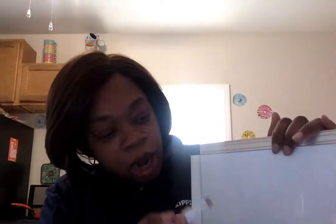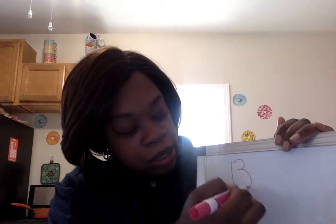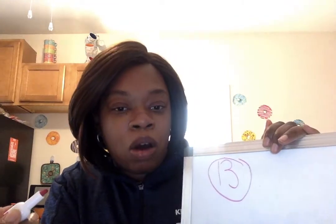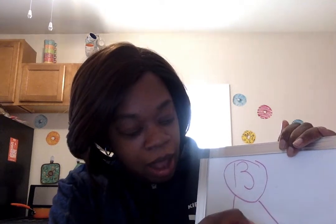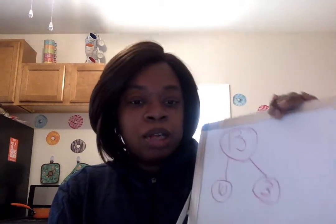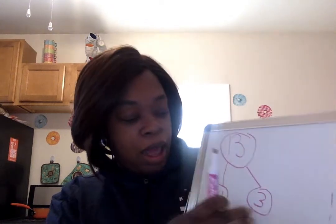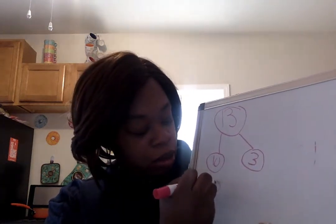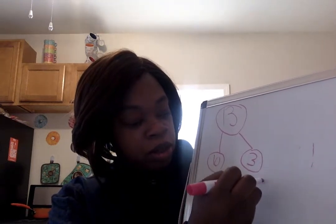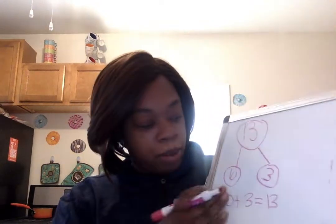You guys can use your paper and pencil to write these numbers down. I'm going to model for you first what we will be doing, and then you guys will be able to follow along the first time and then work on some problems all by yourself. So I'm going to start by making the number bond. You guys remember number bonds. So 13 is in my whole. Now when I make my parts, I have 10 and then I have 3, because we know that 13 is 10 and 3 ones, right? So now I can make my number sentences to show that. I can say that 10 plus 3 equals 13.